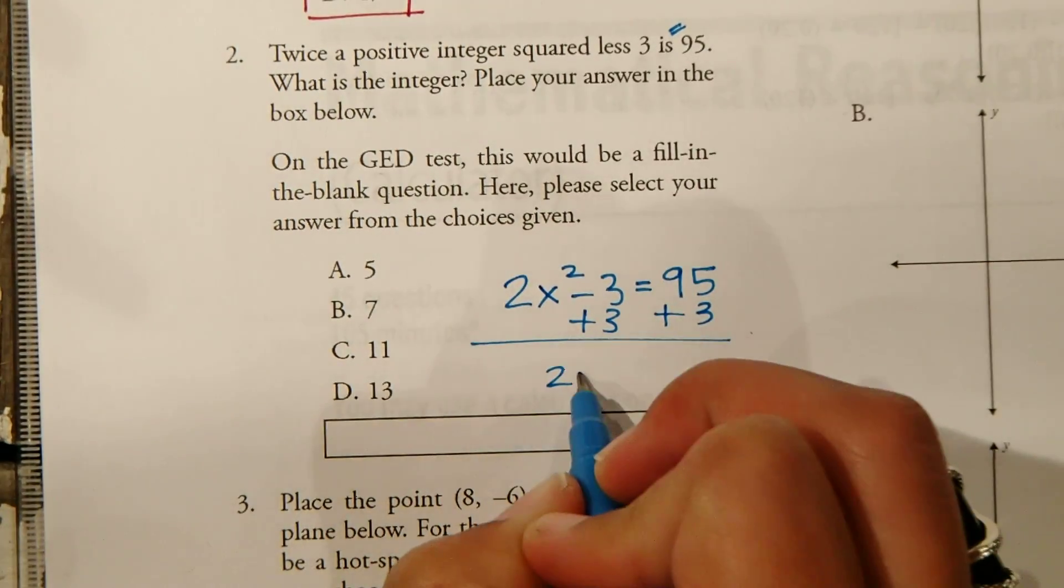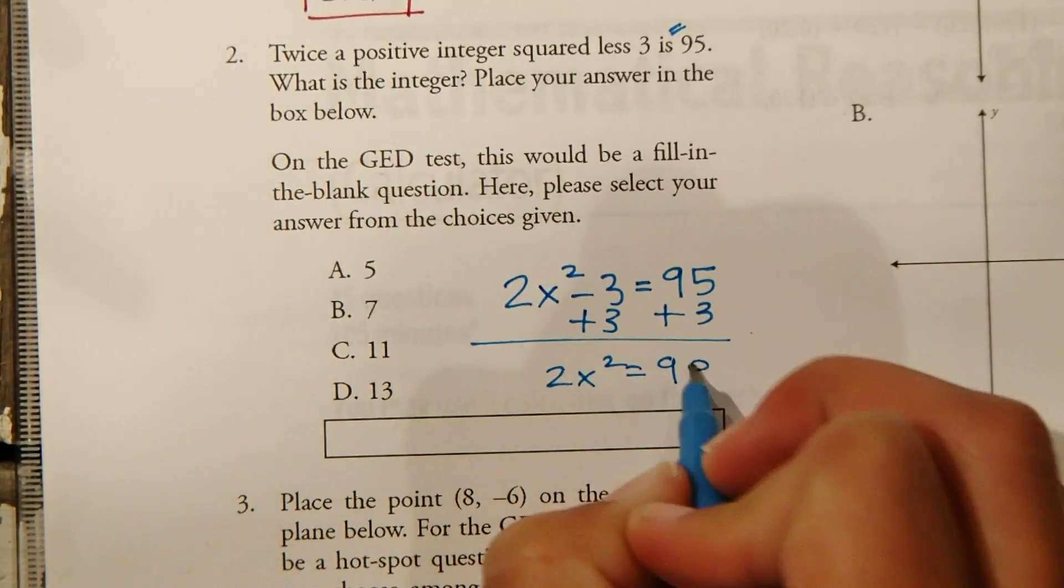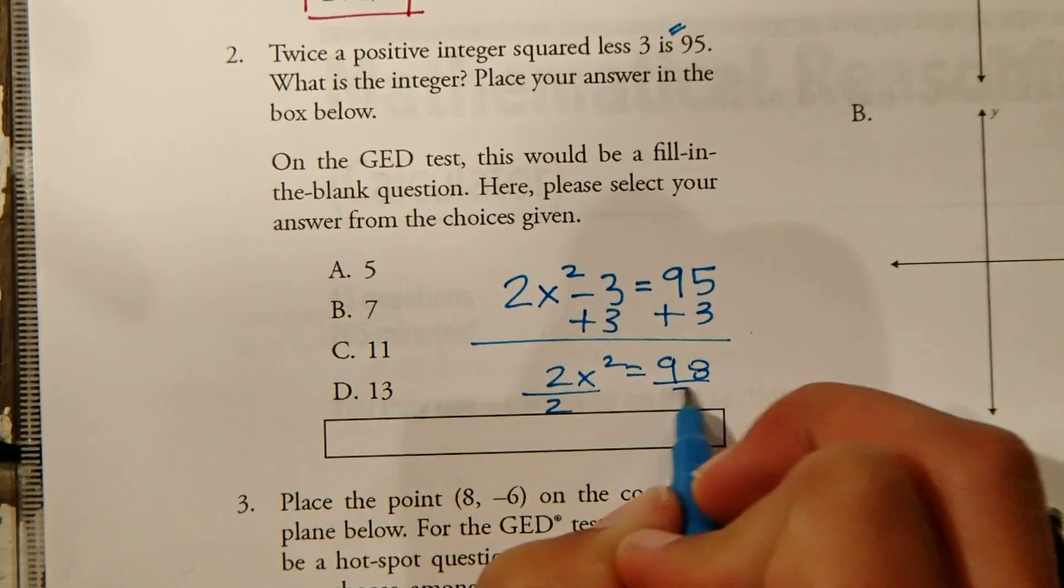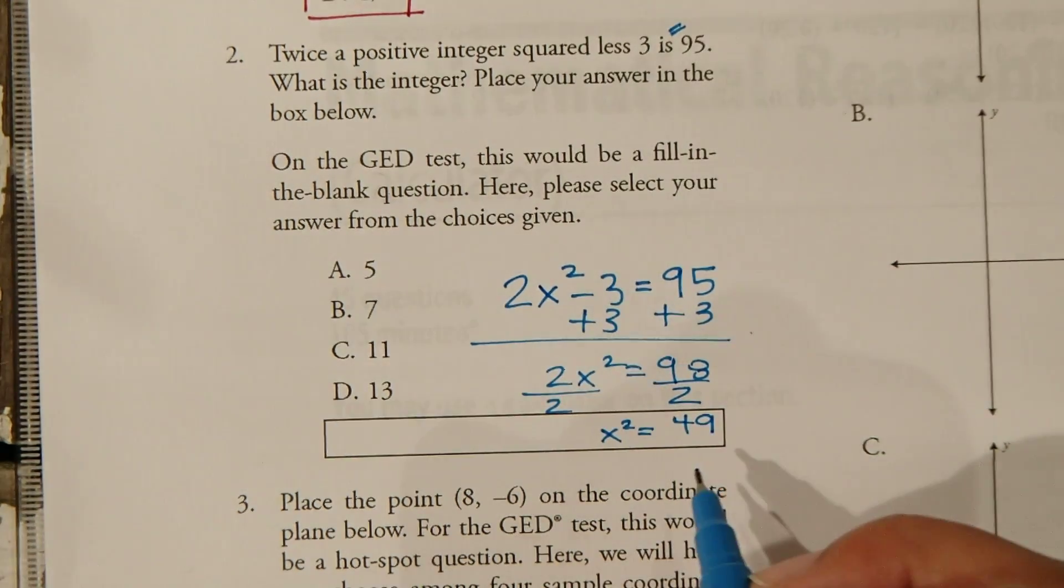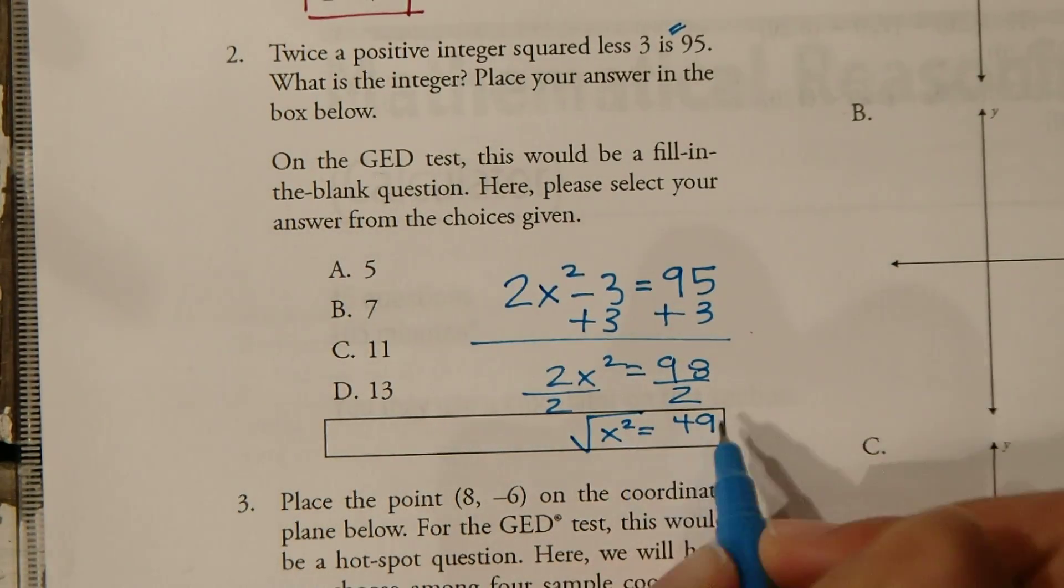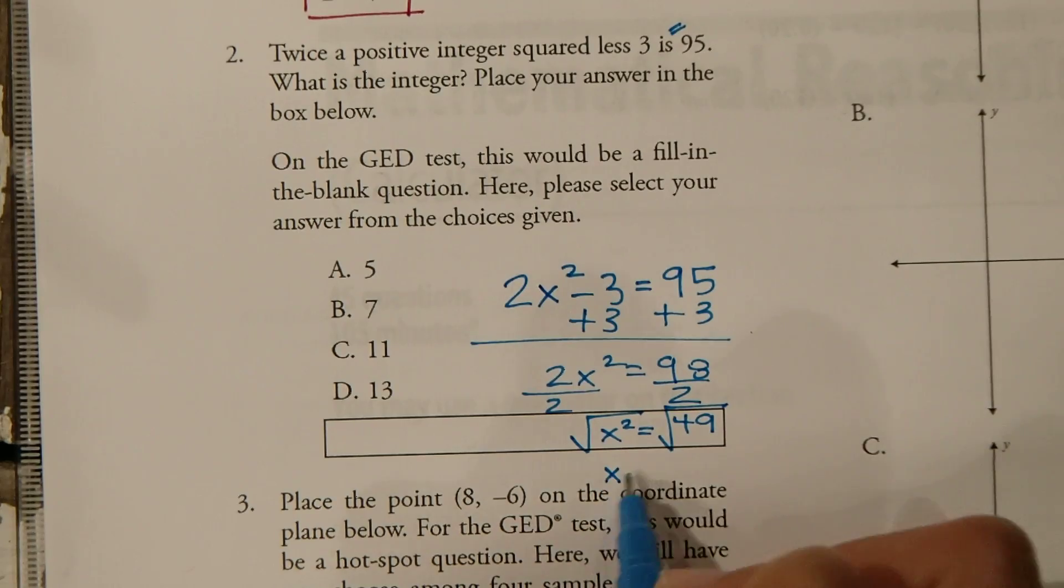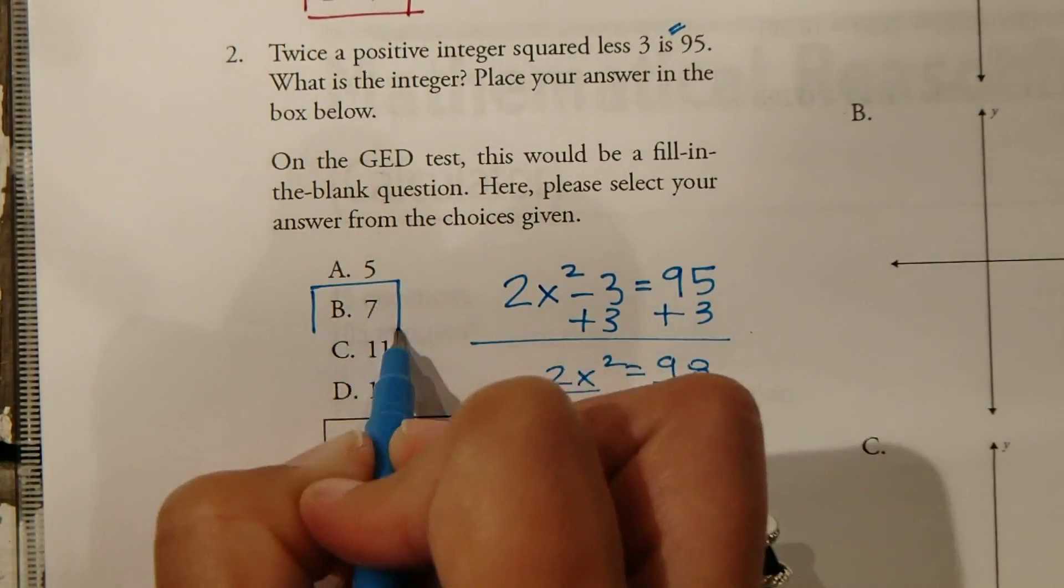So we'll get 2X squared equals 98. Divide by 2, divide by 2. X squared equals 49. And then we can take the square root at this point. Square root. X is going to equal 7. So our answer will be B.